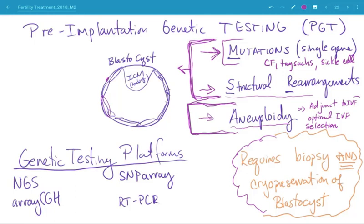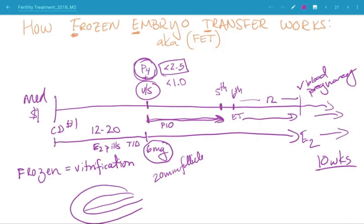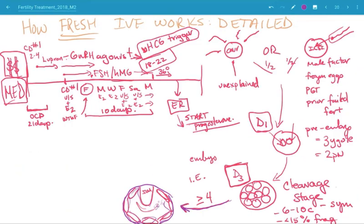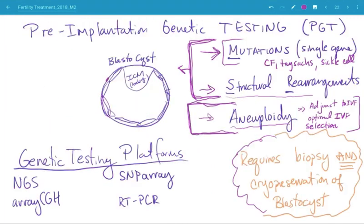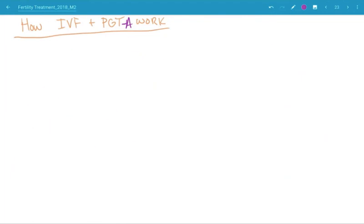In its current form, PGT for aneuploidy remains an optional part of IVF that amounts to a selection tool going above and beyond the current standard. So let's go back to our picture here about how we select an embryo and talk about how IVF with PGTA works.